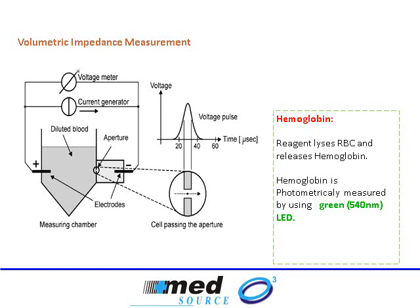One exception is hemoglobin, which is really a protein. Hemoglobin is measured by photometry present inside the analyzer using a green LED. So all the cells are counted on the basis of their size by the cell counter, and hemoglobin is measured photometrically.